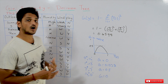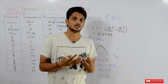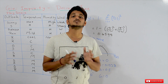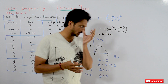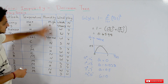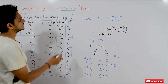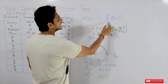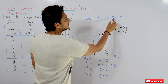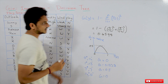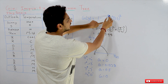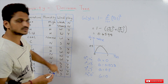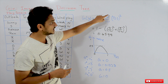First we will understand how to calculate Gini impurity, and then at the end of the class we will understand what is the use of Gini impurity. Gini impurity is given as G(y) = 1 minus sigma i equals 1 to n of p(i) squared. Here i equals 1 to n means n classes. How many classes do we have in this dataset? 2 classes. So n is equal to 2.